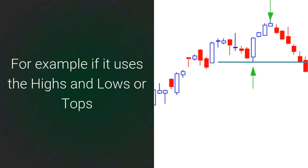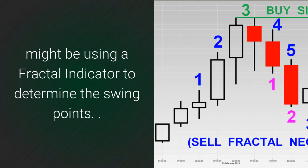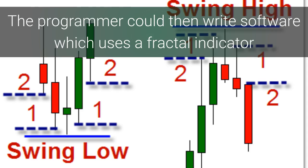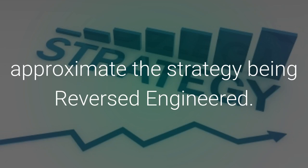For example, if it uses the highs and lows or tops and bottoms of the market to detect good entry opportunities, it might be using a fractal indicator to determine the swing points. The programmer could then write software which uses a fractal indicator and money management rules that approximate the strategy being reverse engineered.